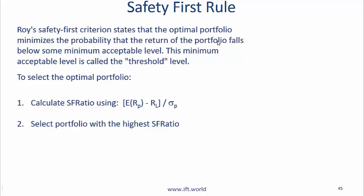Safety first rule. The context here is that if you have two portfolios A and B, one way of determining which is better or which is safer is to figure out the safety first rule, which is the return of the portfolio minus some threshold level or safety level, divided by the risk of the portfolio.